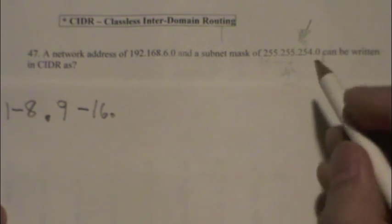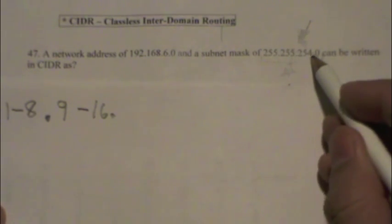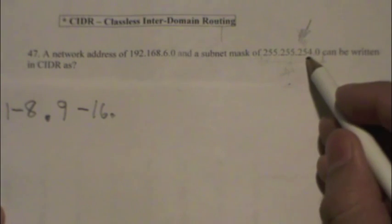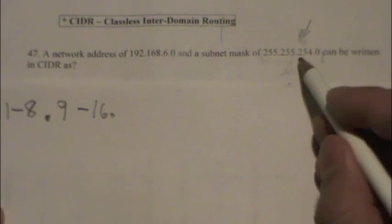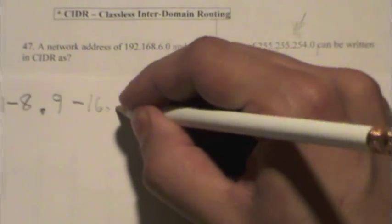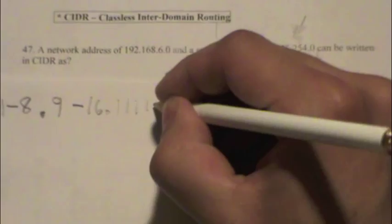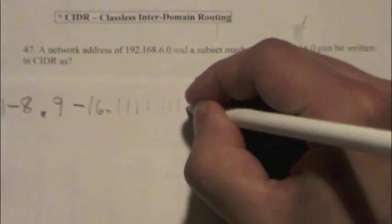For the third octet, it looks like we're one shy of reaching 255 here. So if we convert that to binary, we'll get 1, 1, 1, 1, 1, 1, 1, 0.